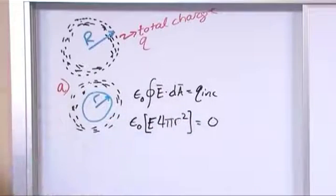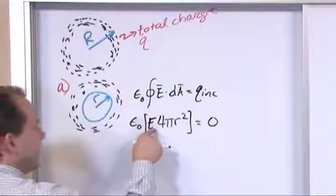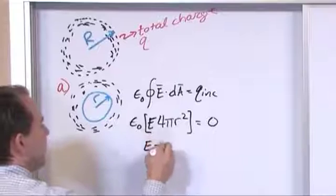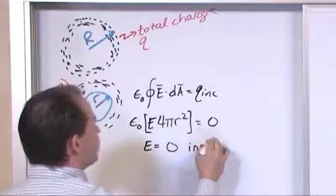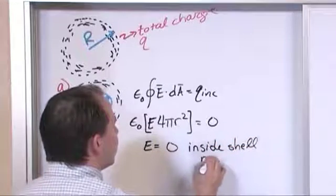There's no charge in here as we're looking inside the shell of charge. So you can see by doing this, if you take and solve for E, the electric field is zero inside the shell.